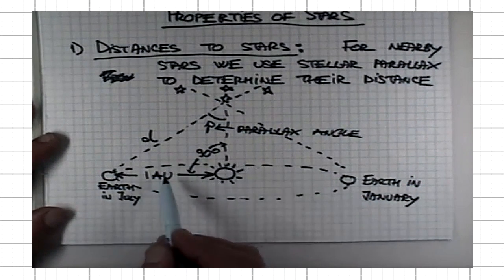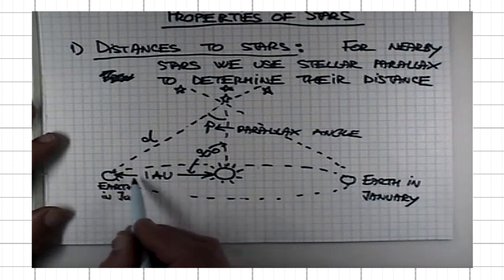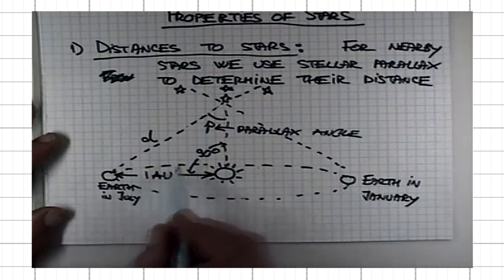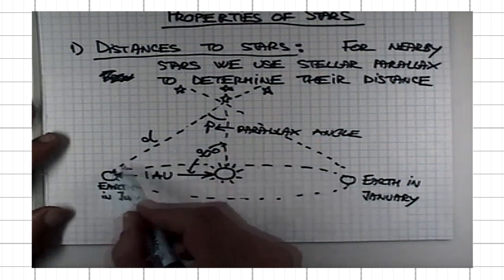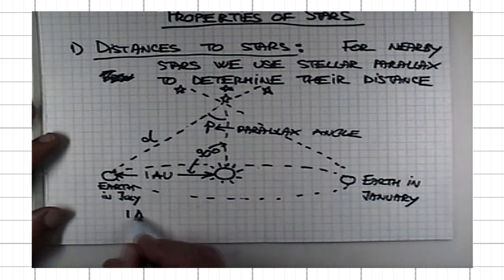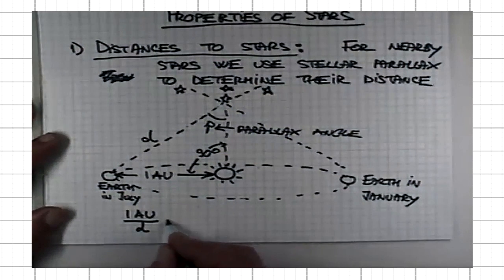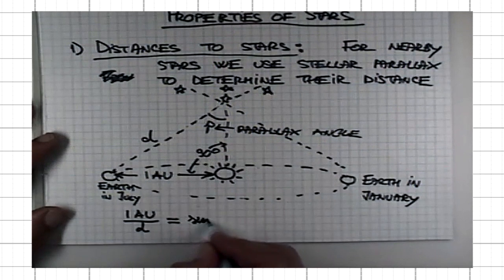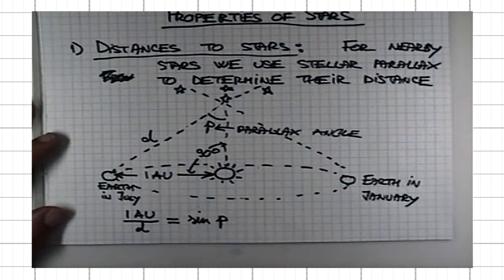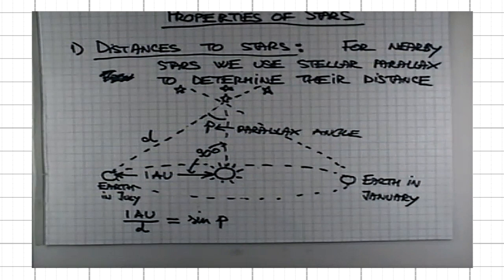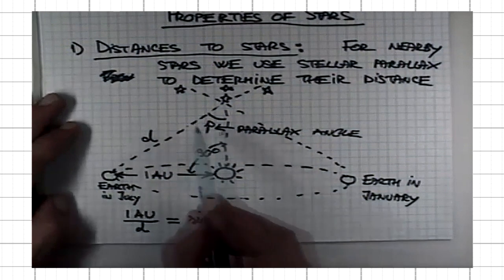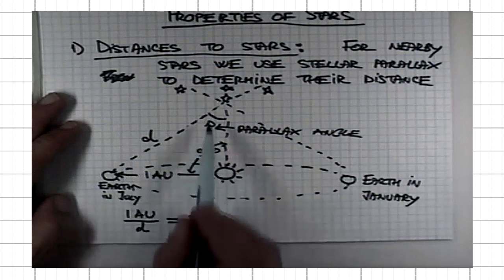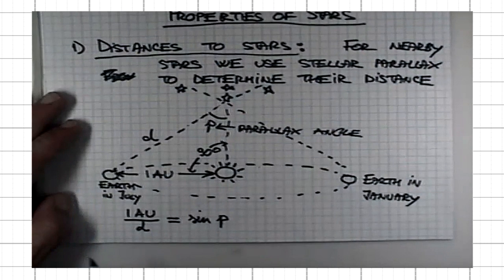Basically, it's a definition of the sine function that the ratio of the side of right angle triangle opposite to that angle over hypotenuse, one astronomical unit over the distance to the star, is basically equal to the sine of this parallax angle. By sine of an angle in a triangle where that angle appears, it is right angle triangle. It's the ratio of the side opposite to the angle over the hypotenuse of the right angle triangle.